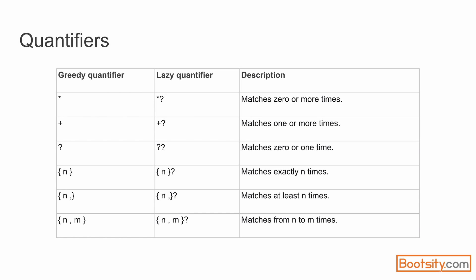Now we are going to look at the different quantifiers available in Python. The first quantifier is star, which matches zero or more times for the preceding character or character set. The second quantifier is the plus sign, which matches one or more times. The third quantifier is question mark, which matches zero or one time for the preceding characters.